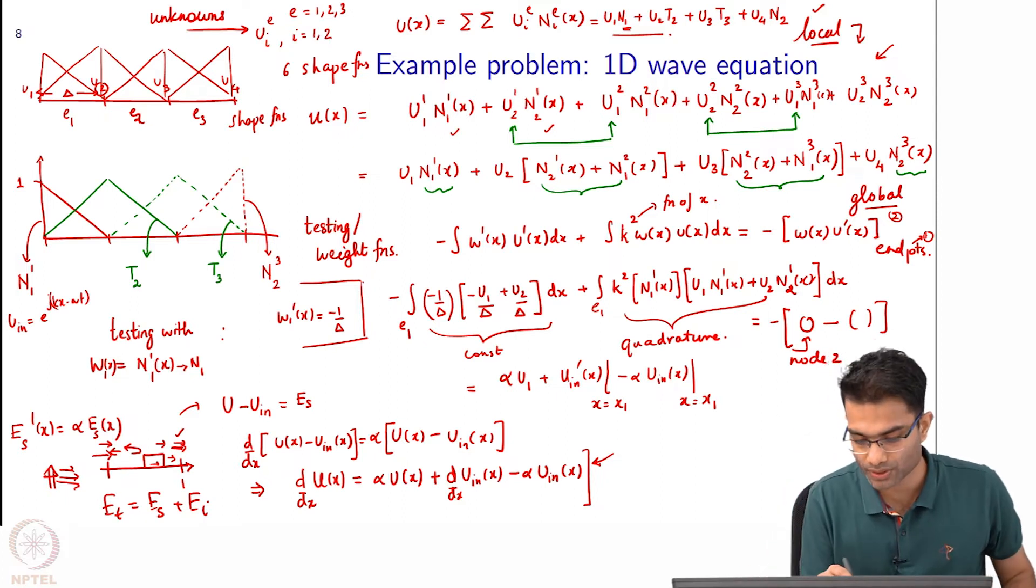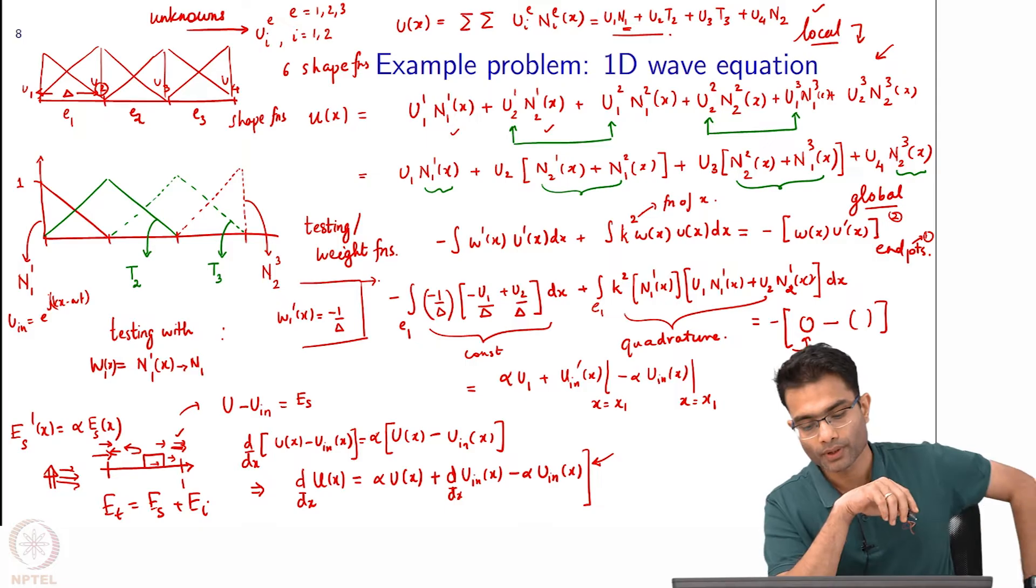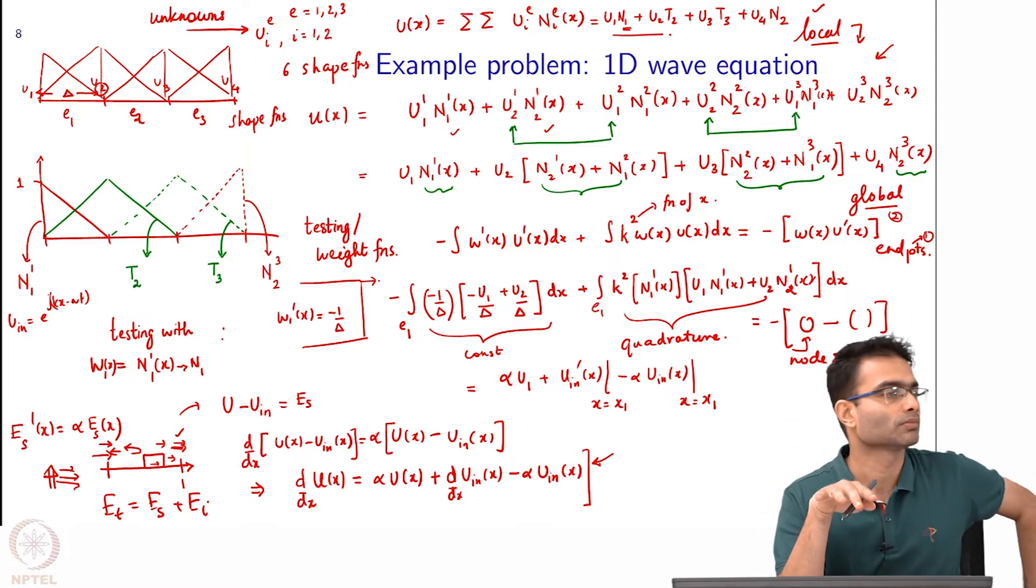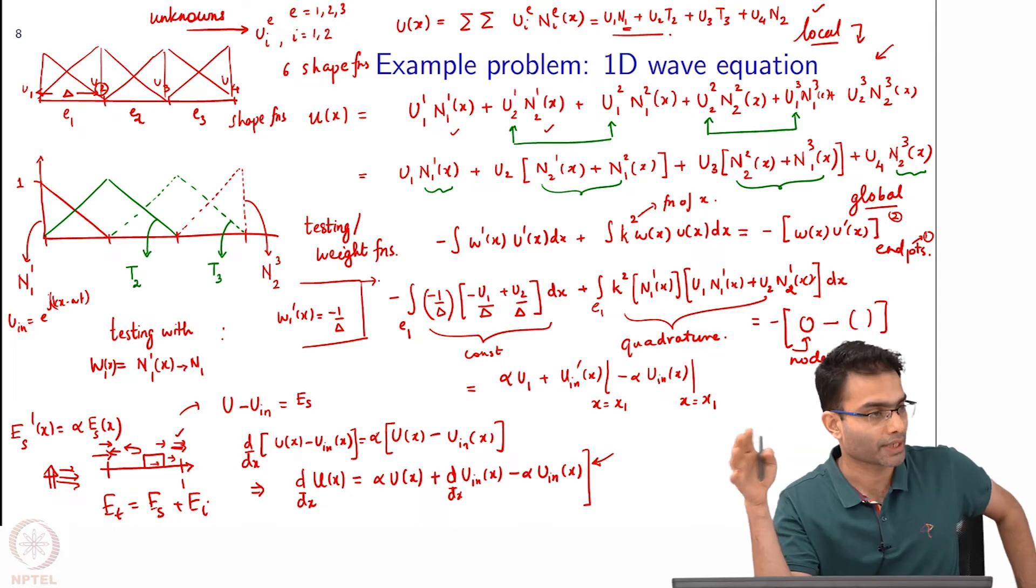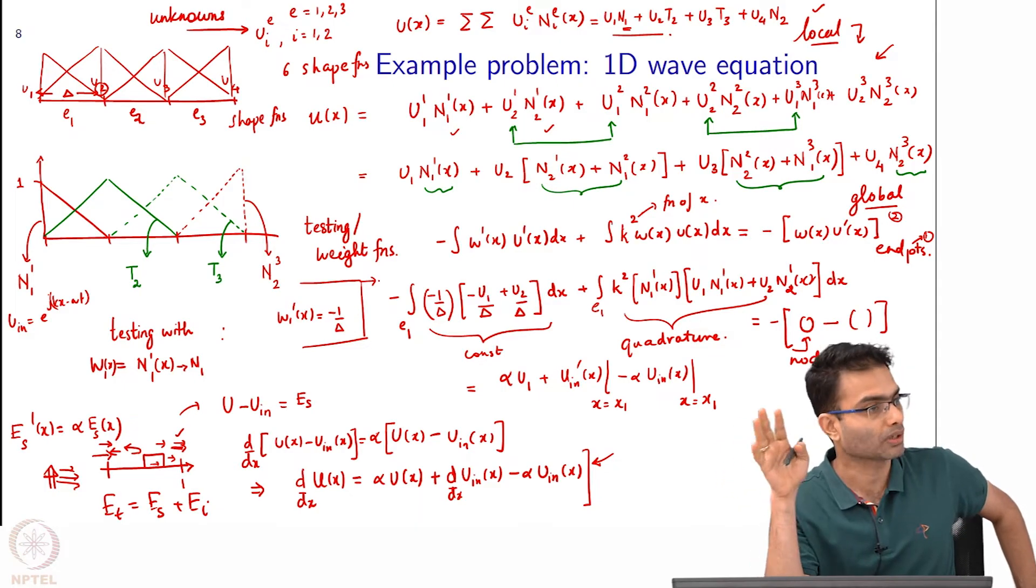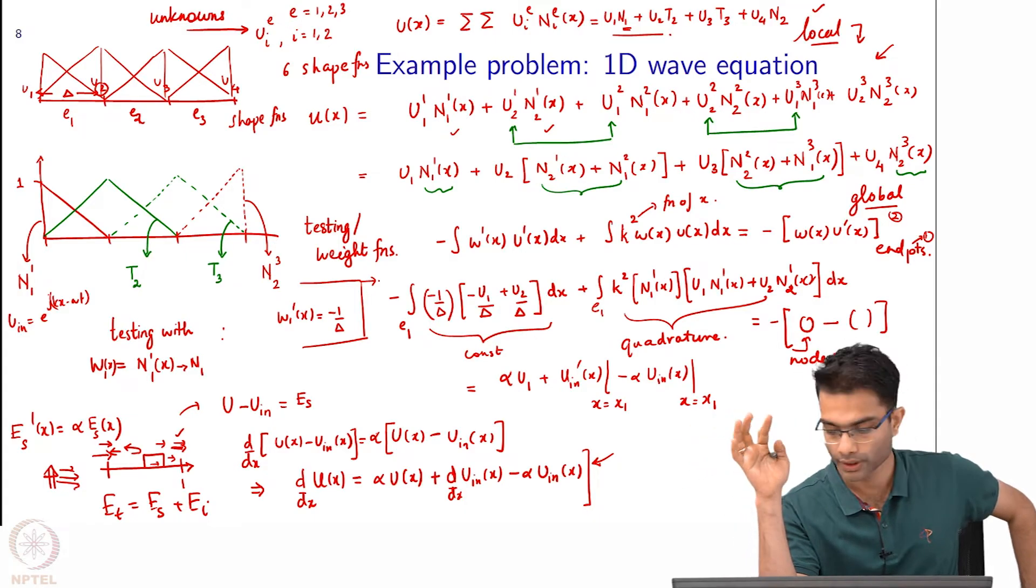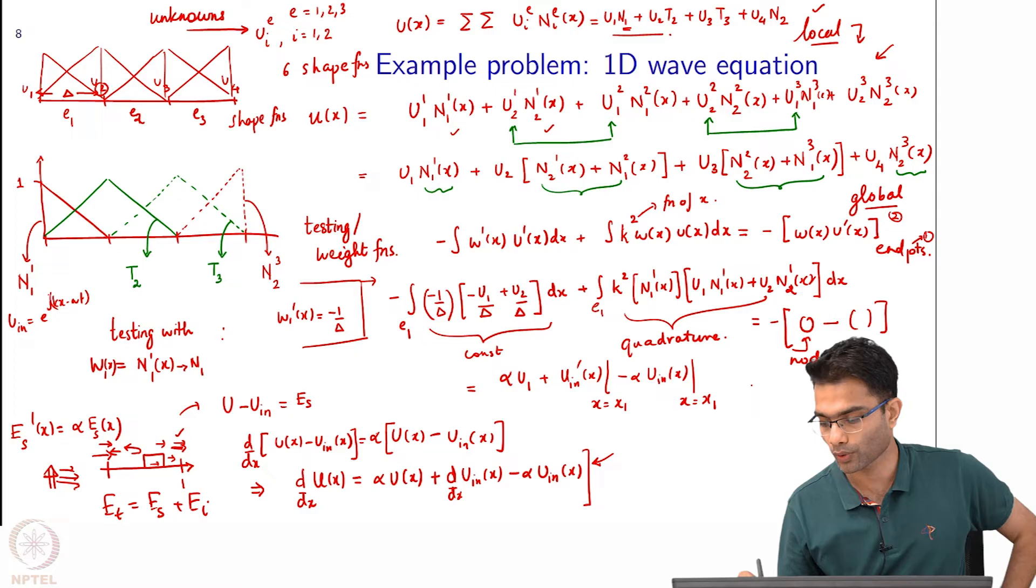Now let us go back to this equation that we have over here. First term u1 u2, second term u1 u2, right hand side is going to give me one more u1 and some constants. In equation form what will I write it as?